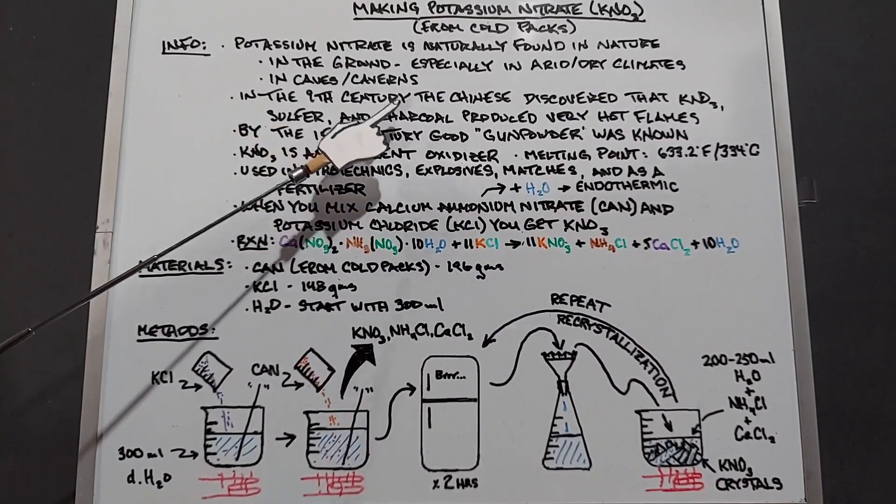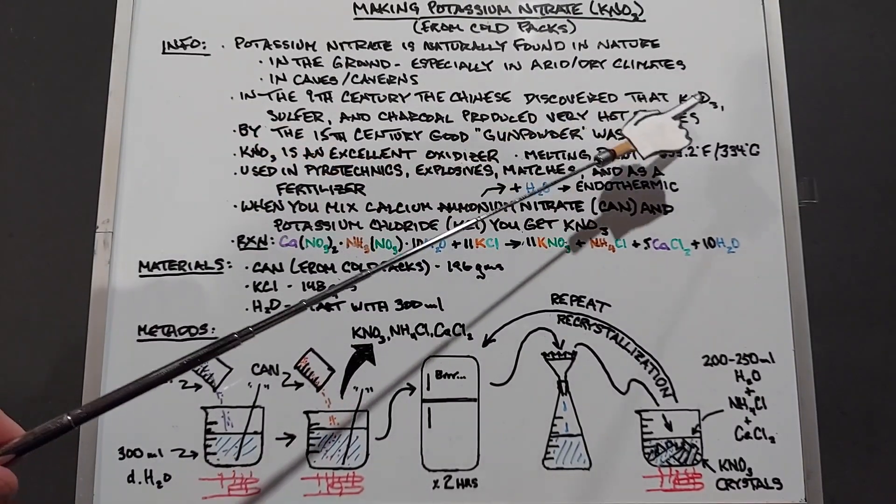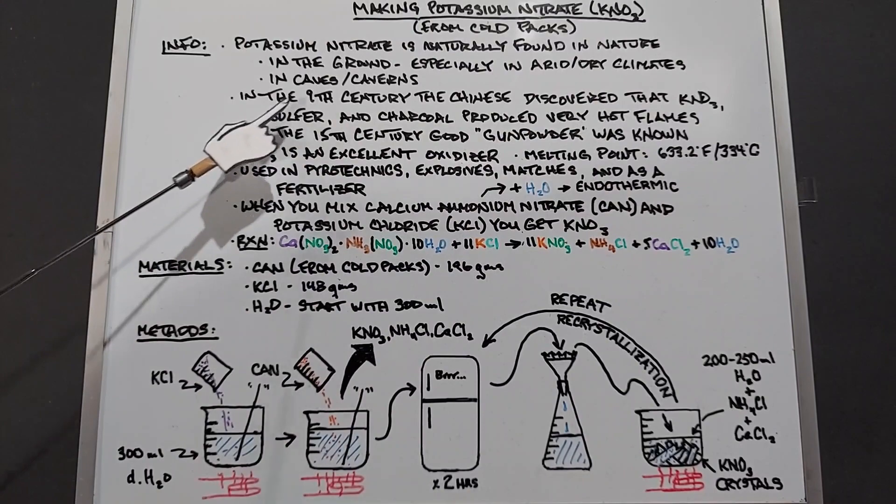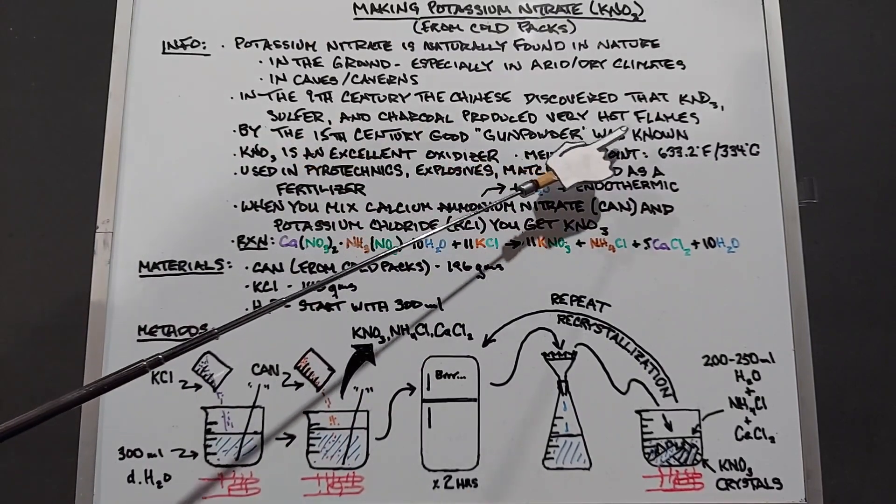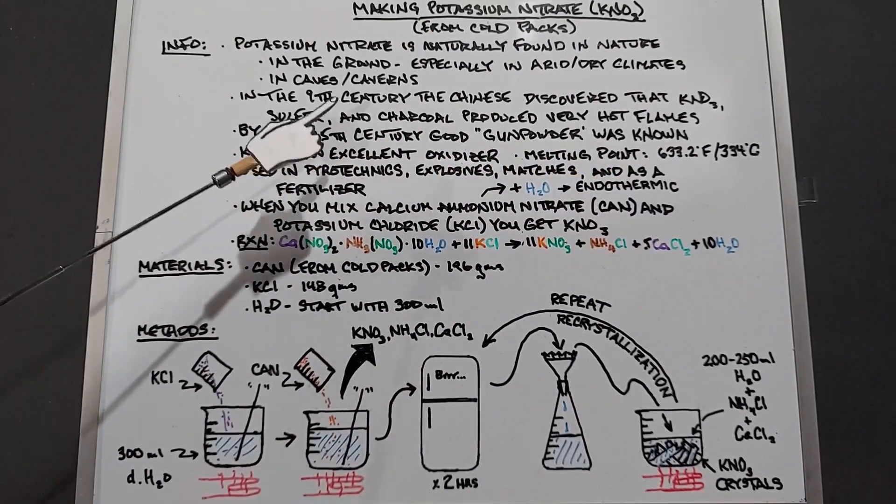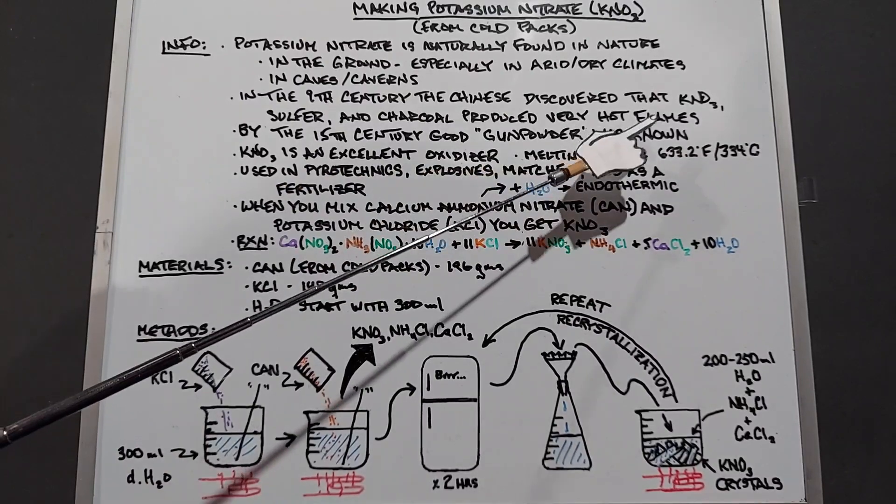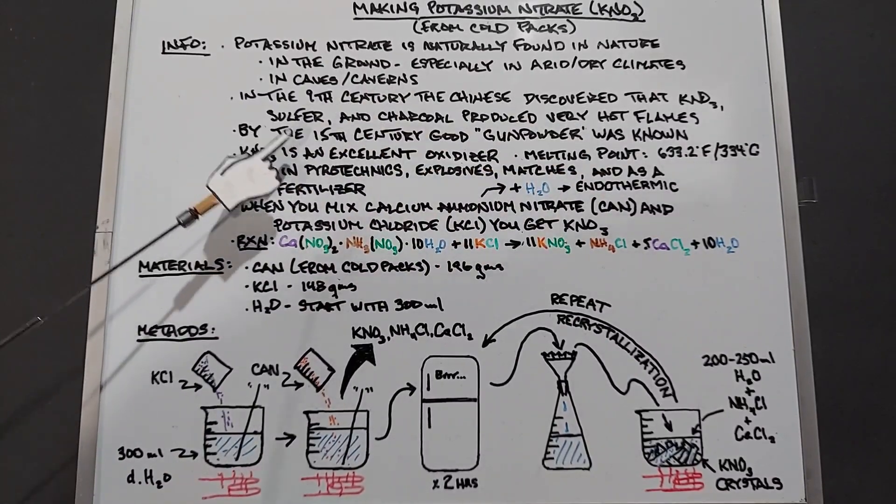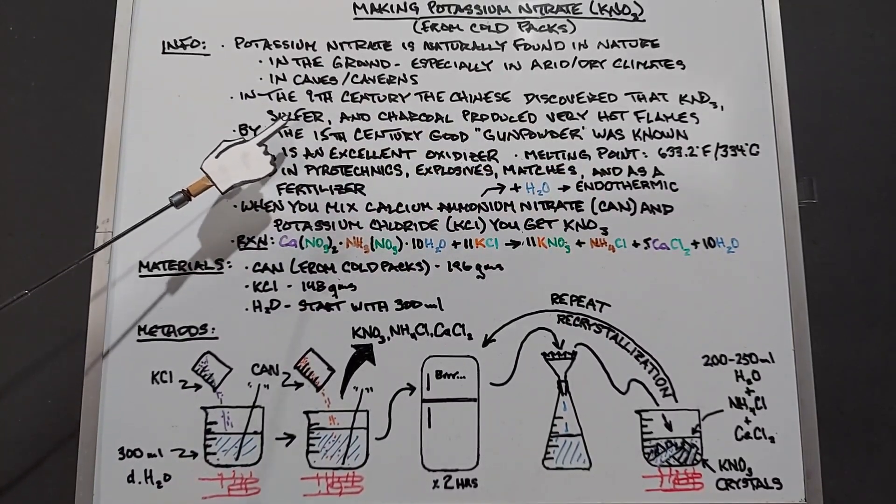In the 9th century, which is the 800s, the Chinese discovered that potassium nitrate, sulfur, and charcoal produced very hot flames. By the 15th century, good gunpowder was already known. It was also known by this time how to make rockets, pretty incredible, and of course fireworks.